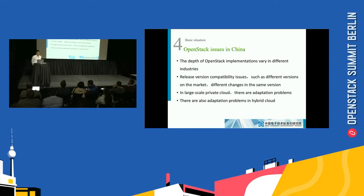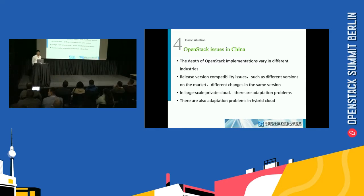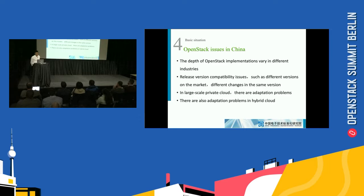This slide shows the open source issues in China. There are four main issues. The first is that the depth of open source implementation varies across different industries. The second is version compatibility issues, such as different versions on the market and different changes within the same version. Third, in large-scale private clouds such as China Telecom and mobile telecoms, there are adoption problems. Fourth, there are also adoption problems in hybrid cloud, such as private cloud to private cloud or to public cloud.